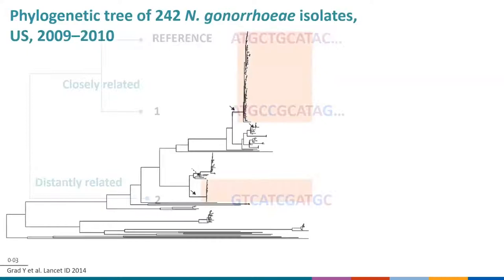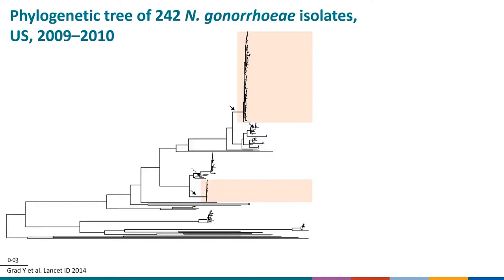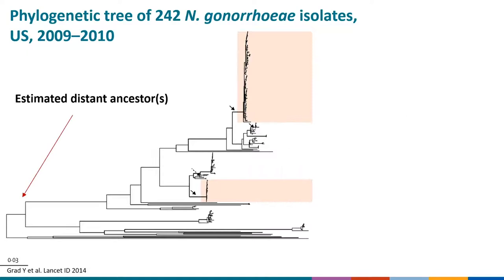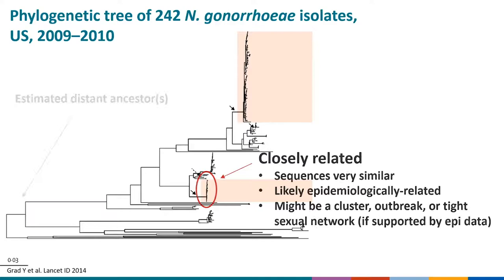In the next few slides I'll show examples of how genomic data can be used and visualized for public health and surveillance. This is a phylogenetic tree of 242 gonococcal isolates from the United States collected in 2009 and 2010. Each line on the right indicates an individual isolate. The far left is the estimated distant ancestor, with the family tree branching outward to the right. The position and branch length indicate how related or unrelated isolates are to each other.